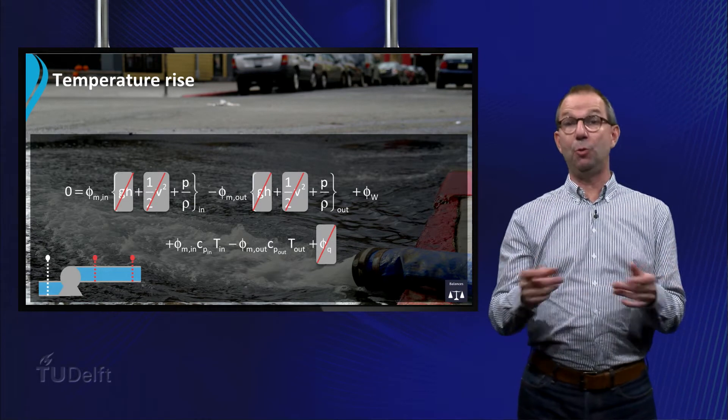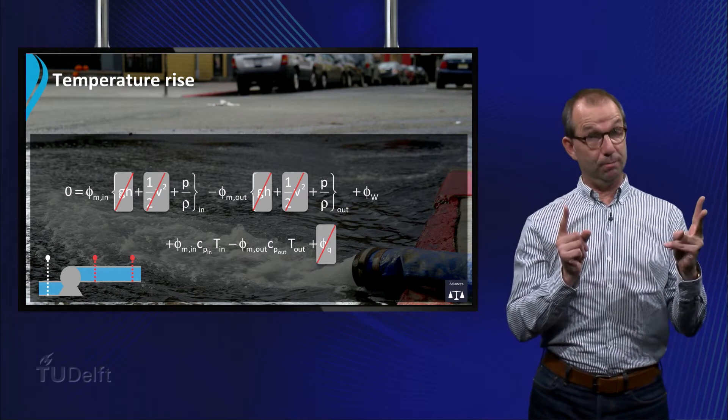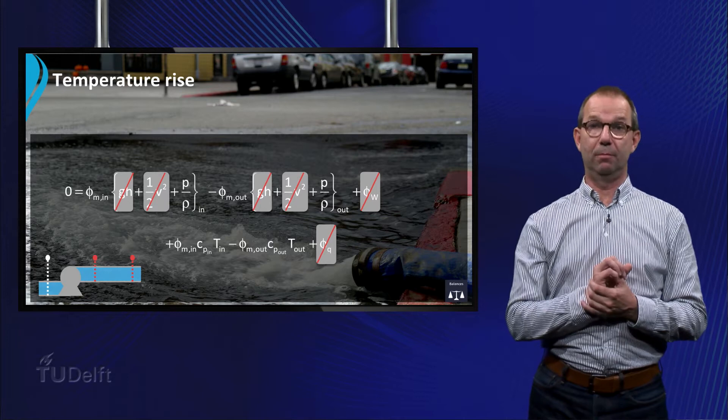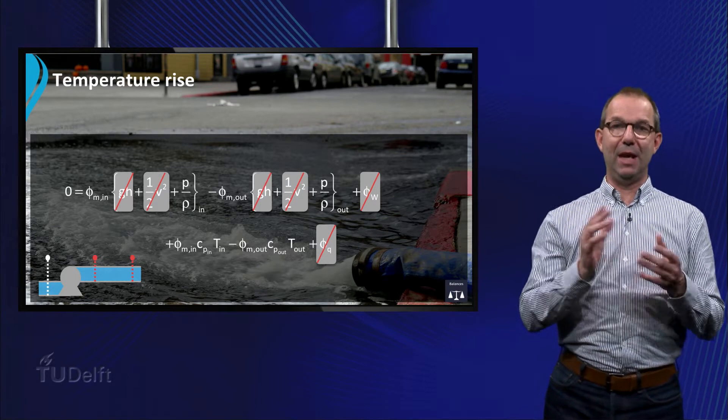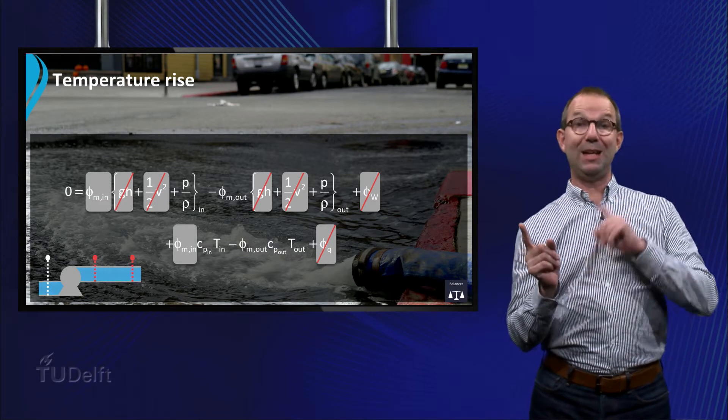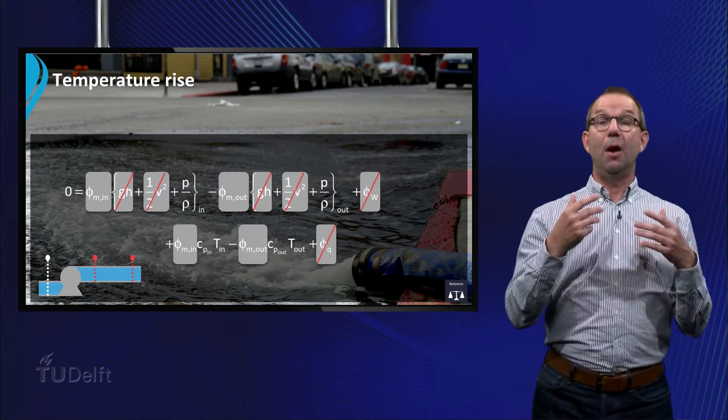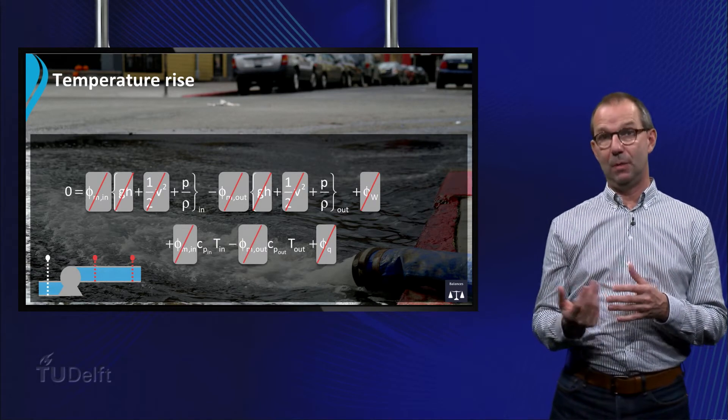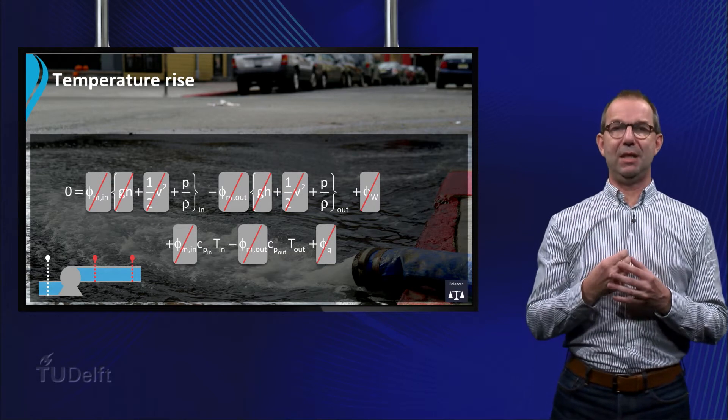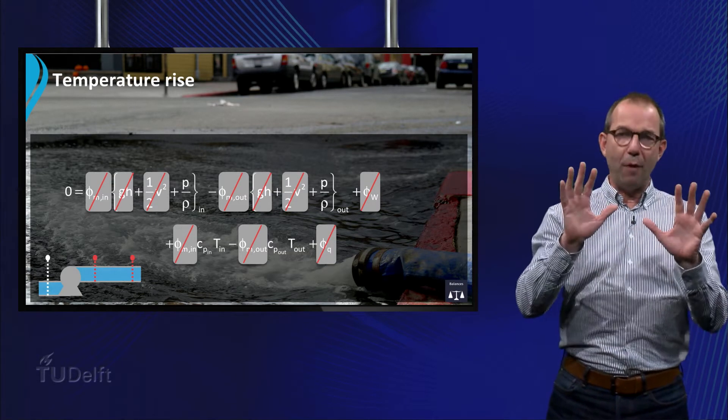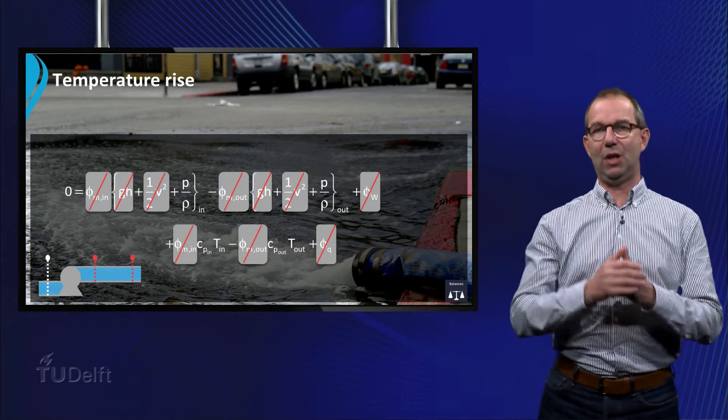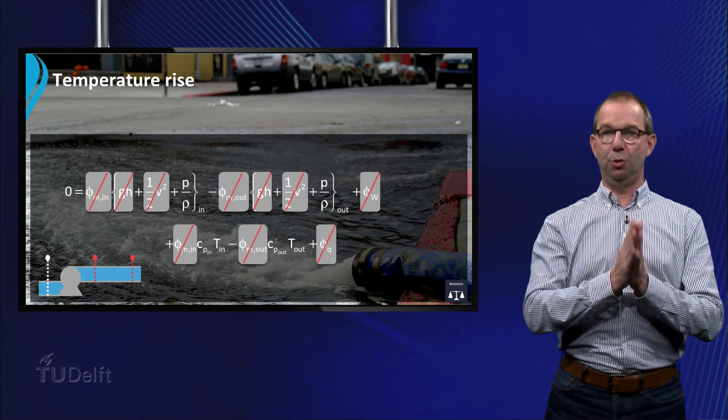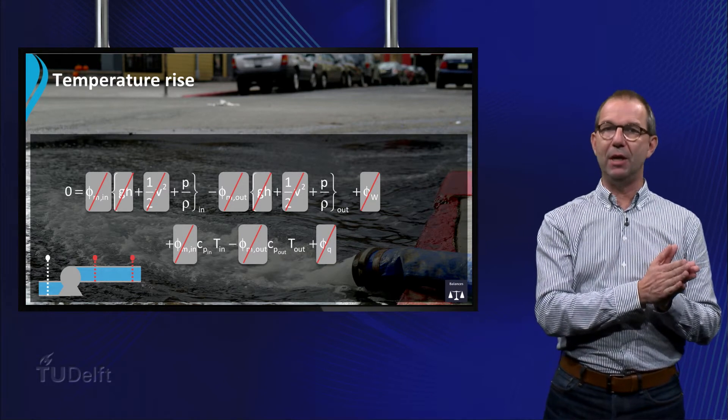No work is done by a pump between point 1 and point 2. And thus, φ_w equals zero. The mass flow rate at the entrance is the same as at the outlet. φ_m in equals φ_m out. If we assume that the heat capacity of the fluid is roughly the same at the entrance and at the outlet of the tube, the total energy balance reduces to a very simplified equation.